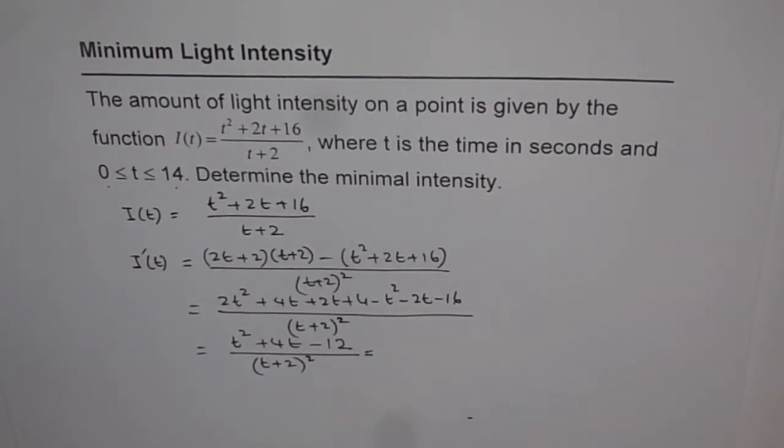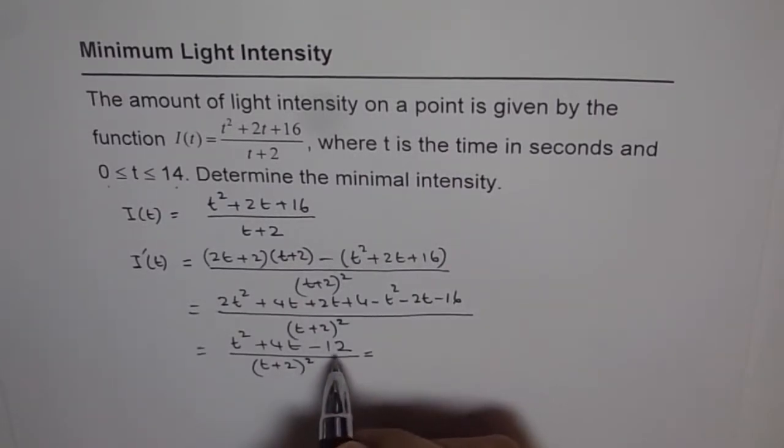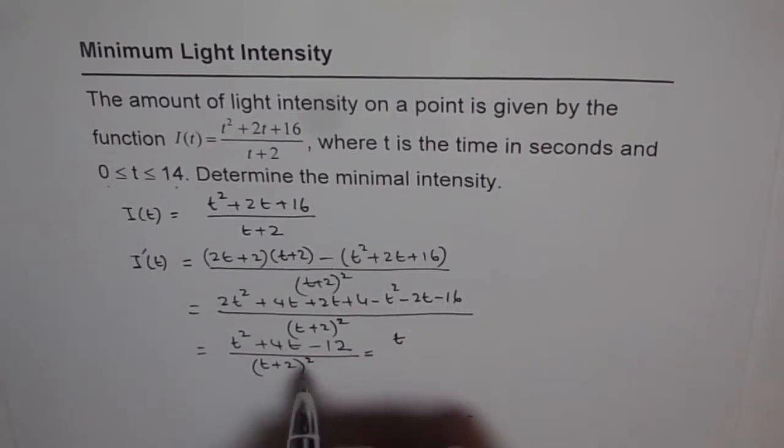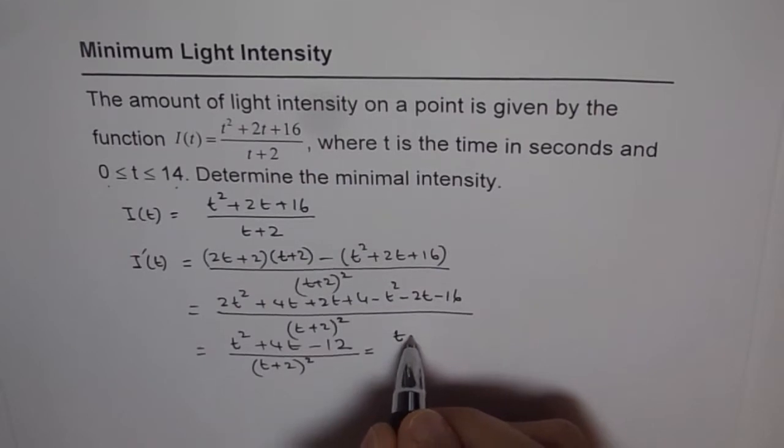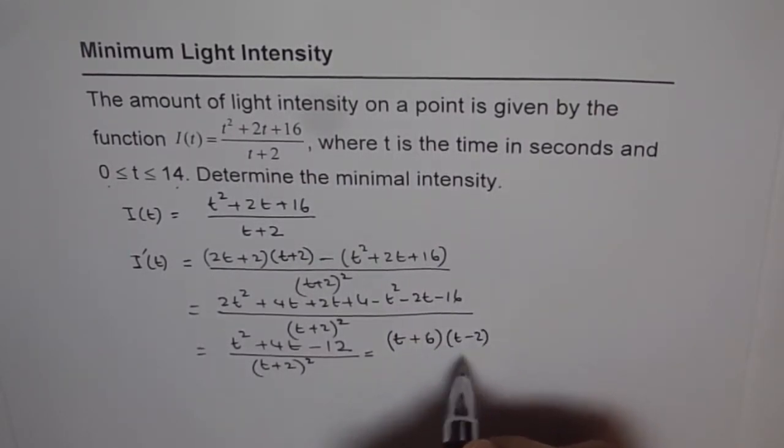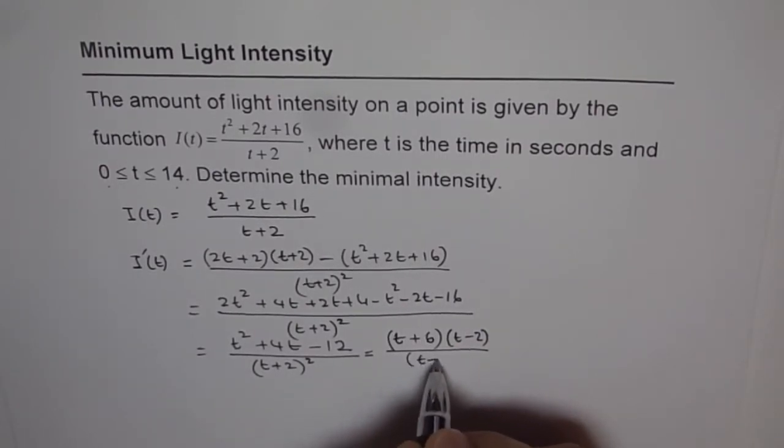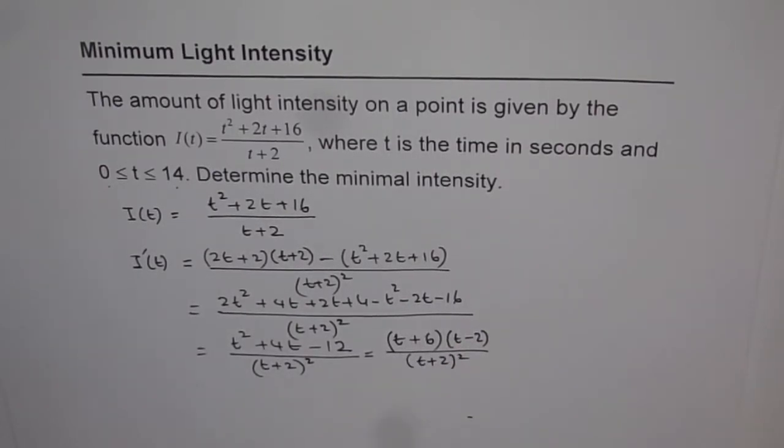And now this can be factored. Now, product of two numbers we are looking for is minus 12 and this sum should be 4. So the numbers are 6 and 2. 6 has to be positive, so 6t plus 6 and t minus 2, that is how the numerator is getting factored and denominator is (t + 2)².